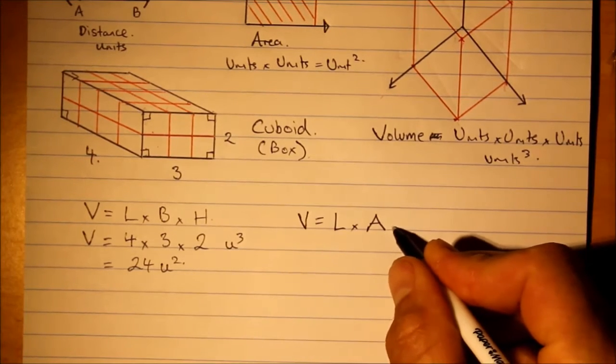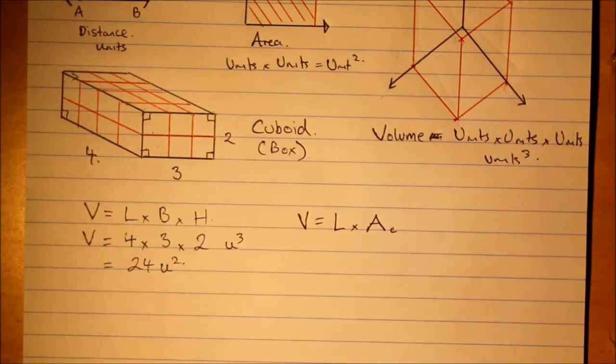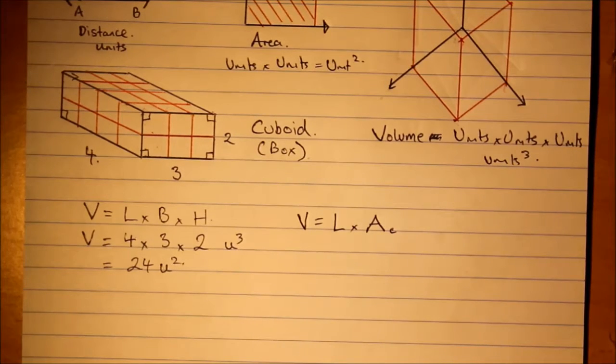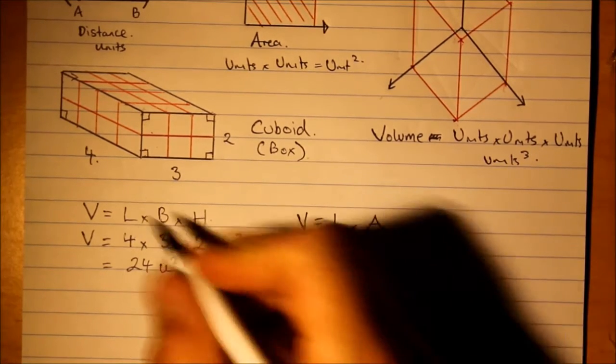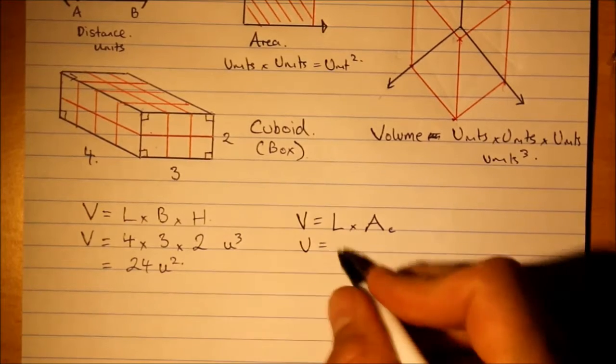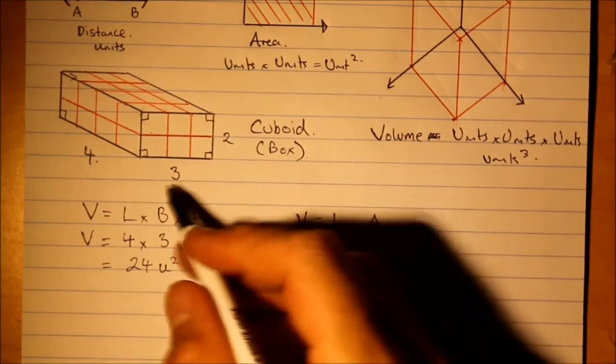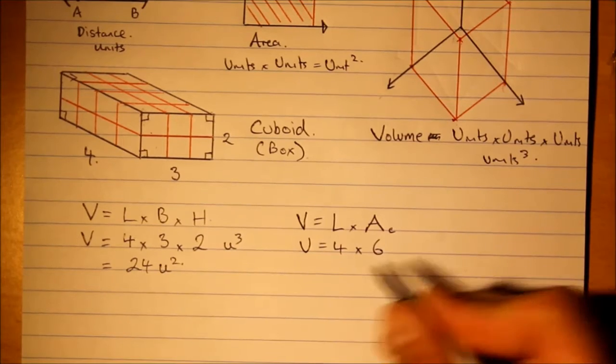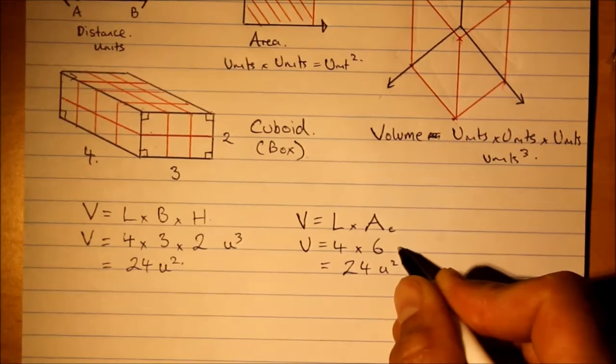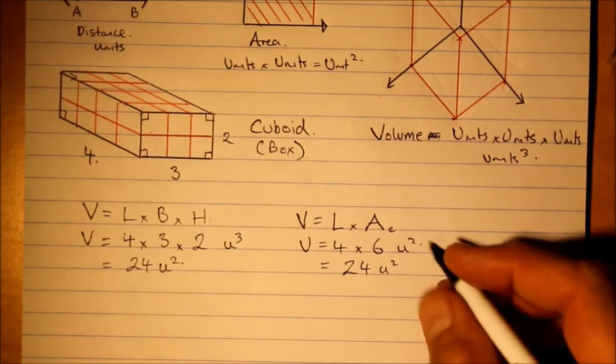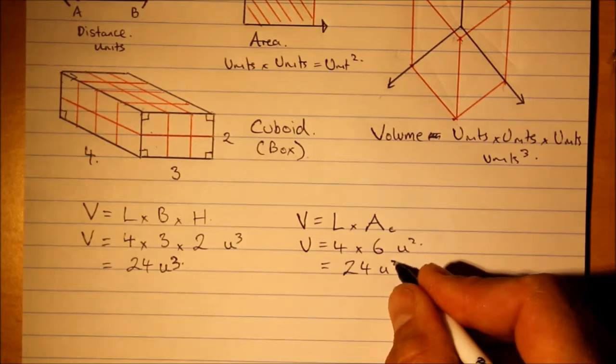And this is cross section. It has to be a prism. Of course, if it changes its cross section throughout, then it's going to affect our calculation. Let's have a look at this. Does it work? Well, volume equals length here is four times. What's the area of that's six. We get the 24 units cubed that we're after.